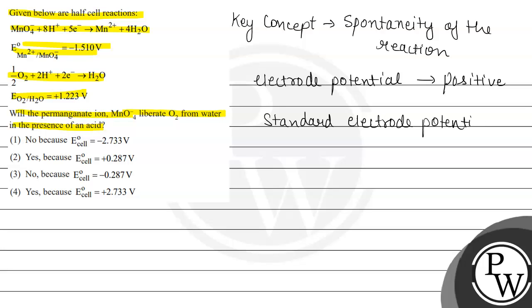For hydrogen, the value is zero volt. And agar standard electrode potential se zyada value aati hai then it is said to be spontaneous. Agar humare paas less value aati hai, which means electrode potential negative mein aata hai, then the reaction is said to be non-spontaneous.